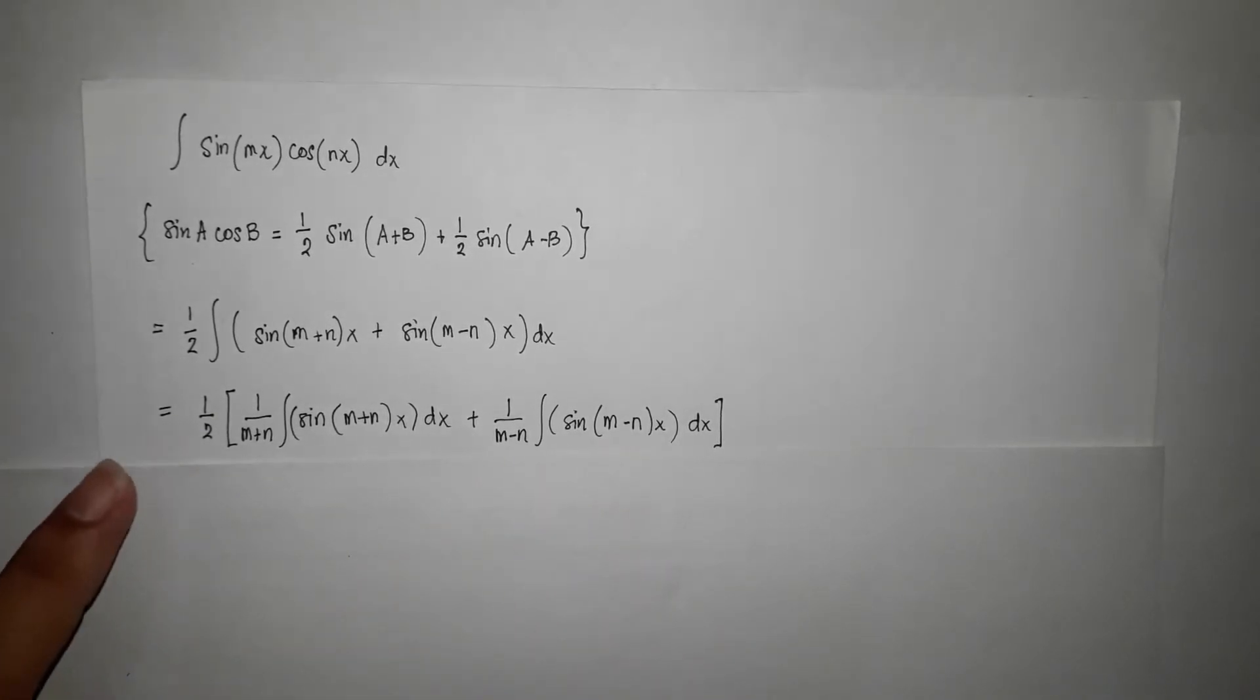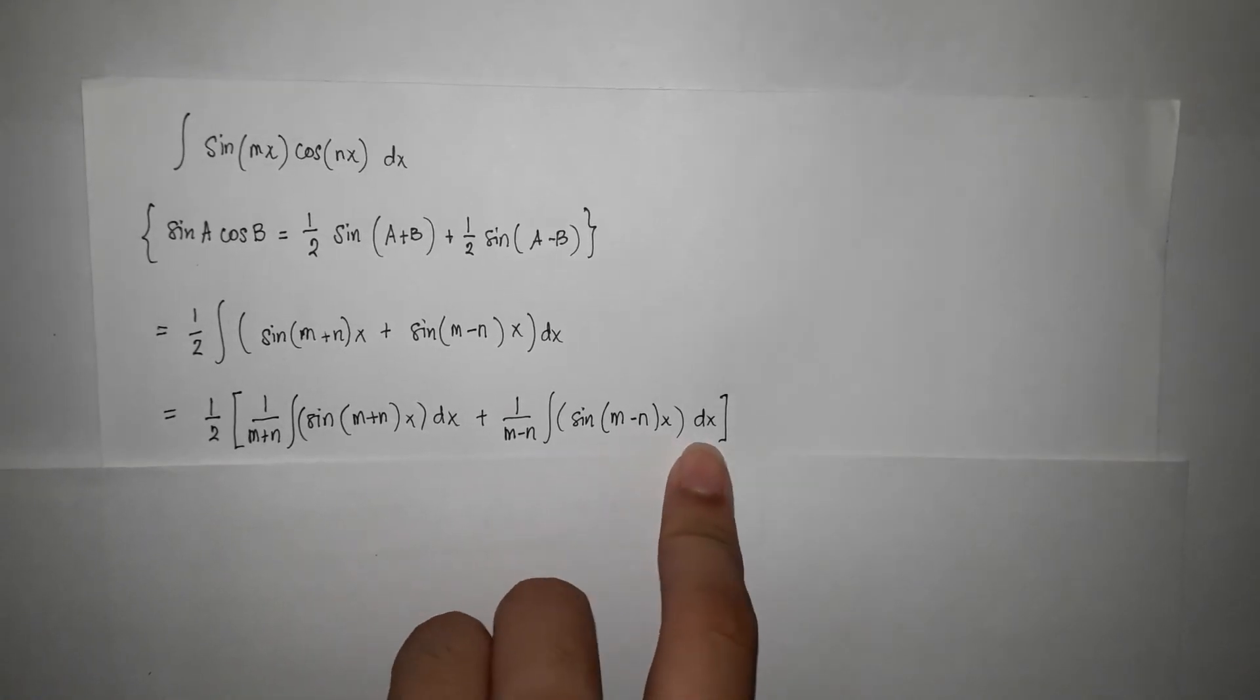So we now have 1 half times 1 over m plus n times the integral of sine m plus nx dx plus 1 over m minus n times the integral of sine m minus n x dx.